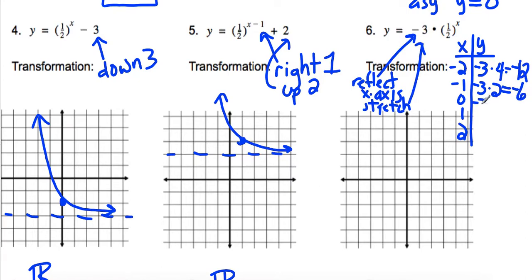Here, I have negative 3 times 1 half to the 0 power. Anything to the 0 power is 1. Negative 3 times 1 half to the first power is just negative 3 times 1 half, which is going to be negative 1.5. And, we have negative 3 times 1 half squared, which is 1 fourth. So, negative 3 fourths, negative 0.75.